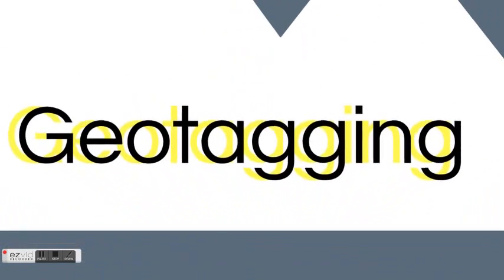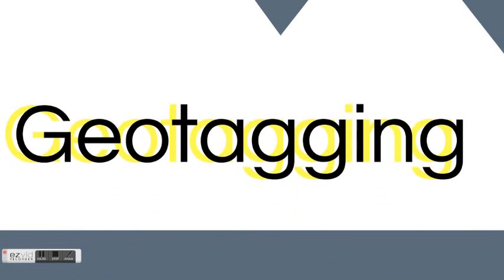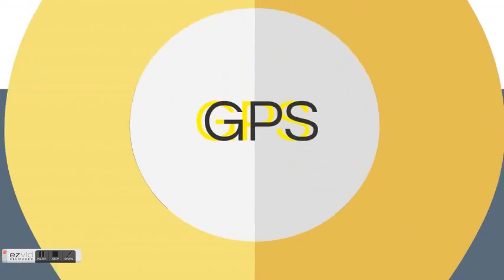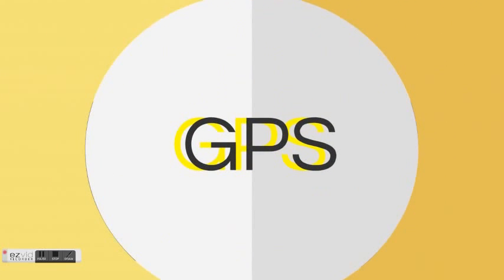Next, geo-tagging. Most of us upload images on social media. Geo-tagging is able to extract a wealth of information about you. GPS is another technology that is small enough to be dropped in car seats or a cup holder. It allows harassers to know where you are at all times.